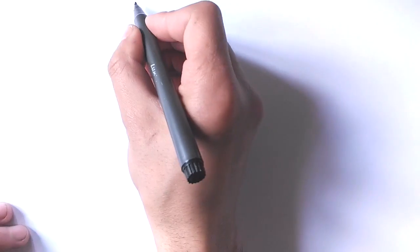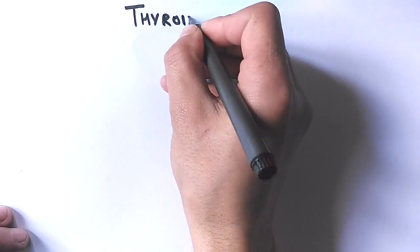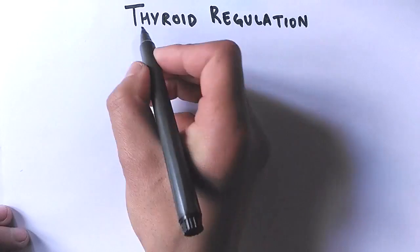Since we have already discussed the thyroid gland and its hormones, now in this video we'll be discussing thyroid regulation, how these thyroid hormones are getting produced and secreted and how negative feedback comes into action. Let's find out in this video.